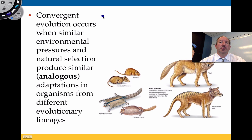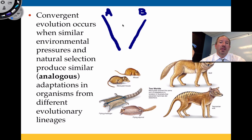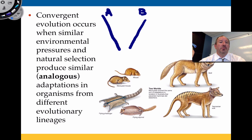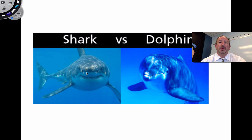Convergent evolution means two dissimilar organisms begin to look more similar even though they don't have much in common in terms of their ancestry. For example, the flying squirrel of North America and a marsupial mouse do not have common ancestors, but in a similar environment they begin to look more similar — those are analogous structures. A classic example would be the shark, which is a type of fish, and a dolphin, which is entirely a mammal. They begin to look similar because they're in a similar environment, and their traits have adapted to suit that environment. But it doesn't mean they're closely related based on those morphological phenotypes.